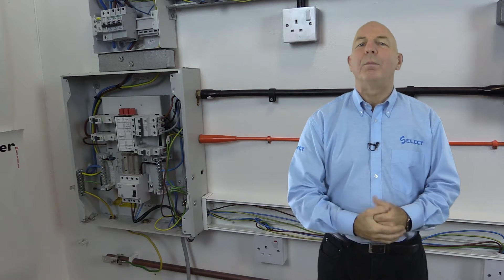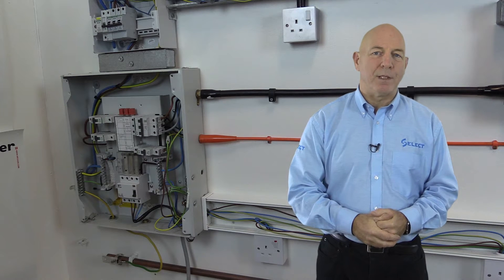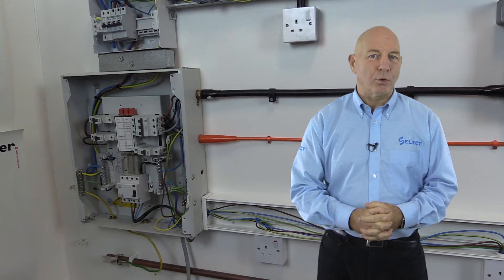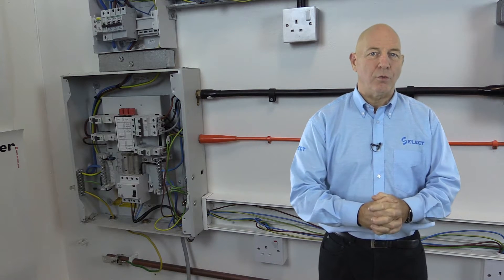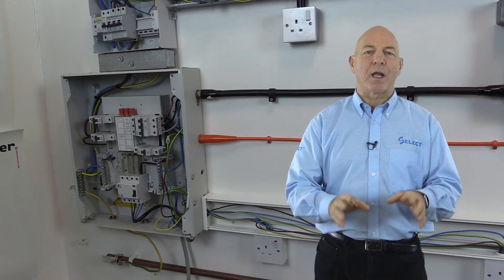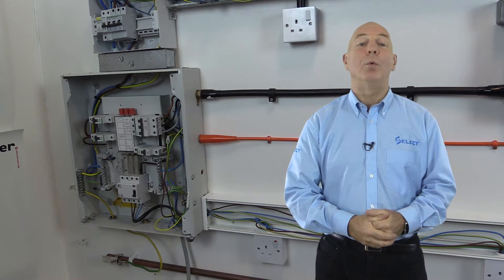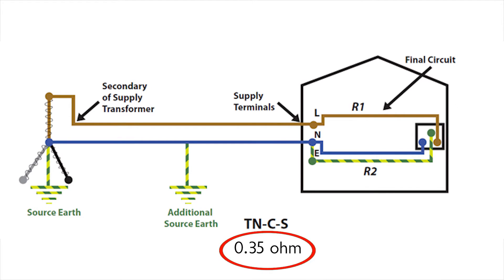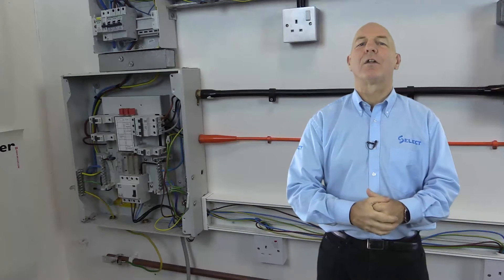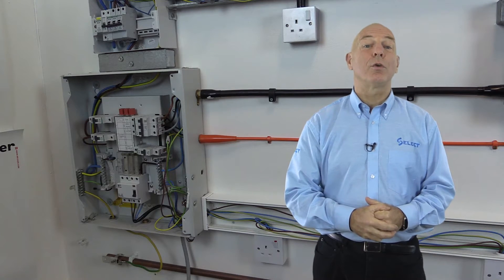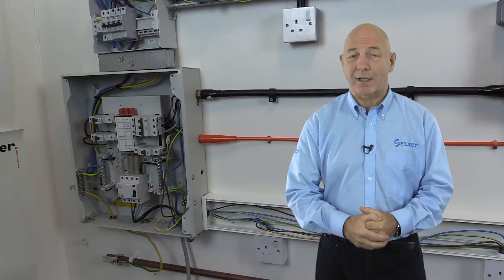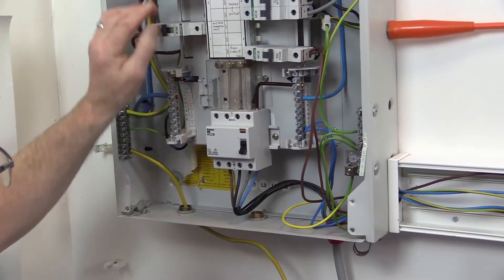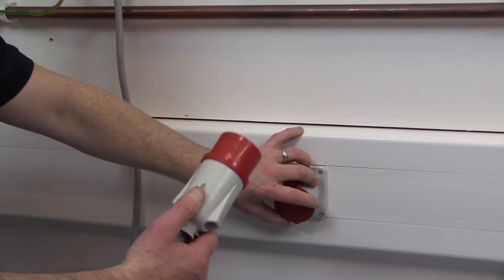The first part of the test will be to verify the external earth fault loop impedance, known as ZE, which is that part of the earth fault loop impedance path external to the installation. This can be determined by inquiry by contacting the distributor network organisation, who will provide industry values. For a TN-S system this can be up to 0.8 ohms, and for a TN-C-S system it can be up to 0.35 ohms. It's recommended that a test of earth fault loop impedance is made to ensure that the distributor's earth terminal is actually connected to earth. This is a power-on test, so great care is necessary to ensure safety during the test.